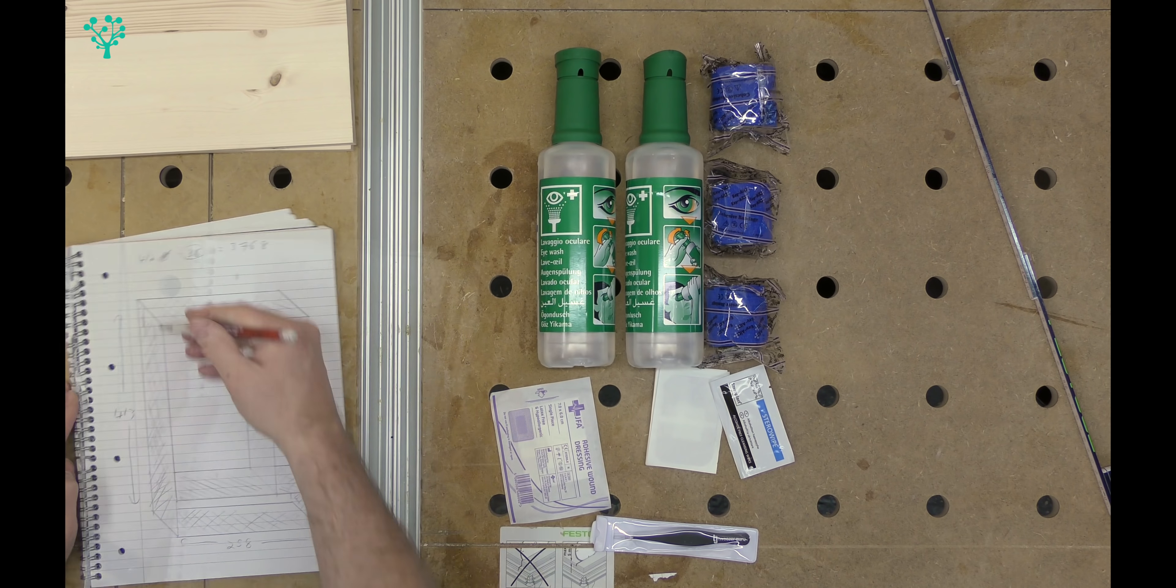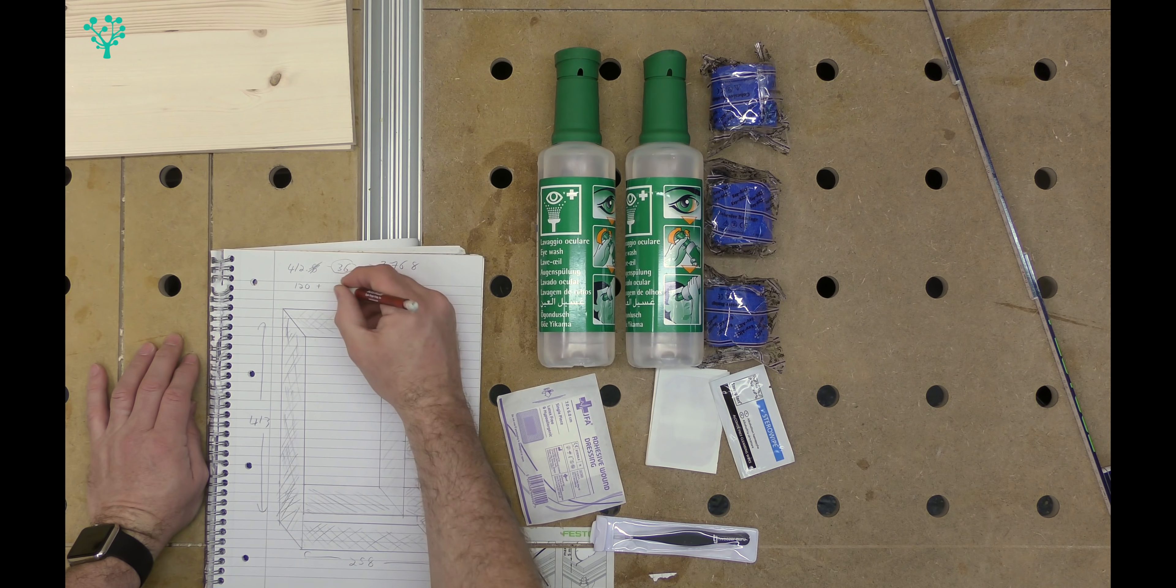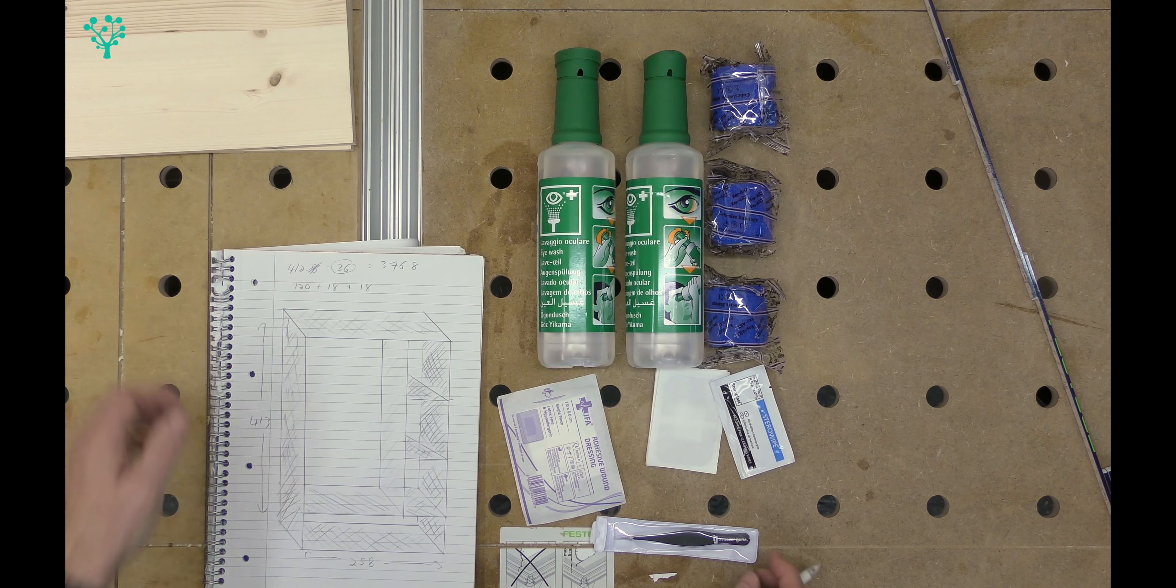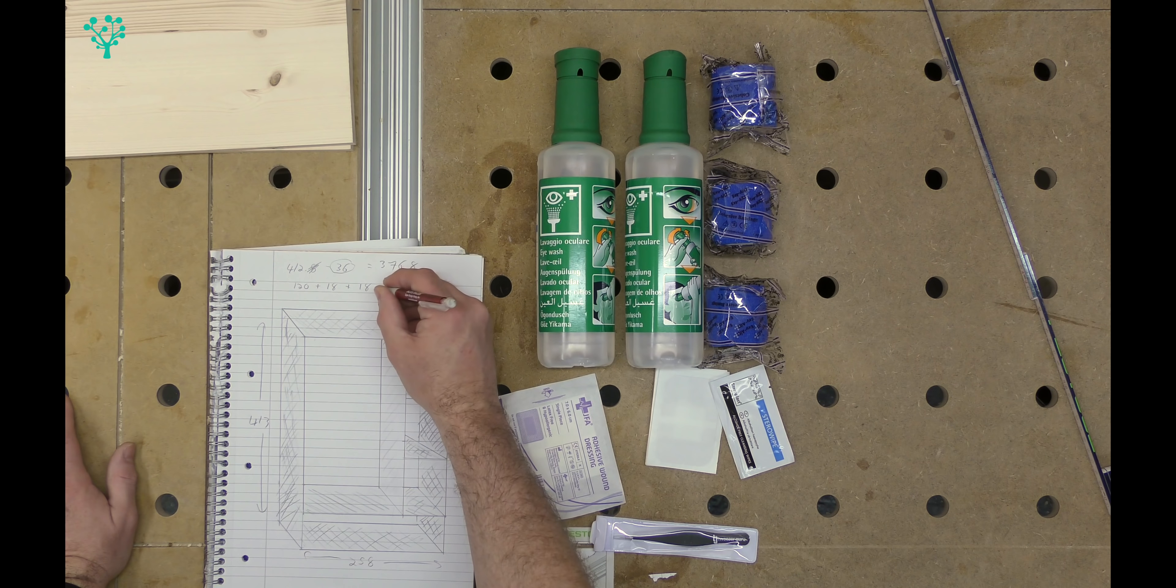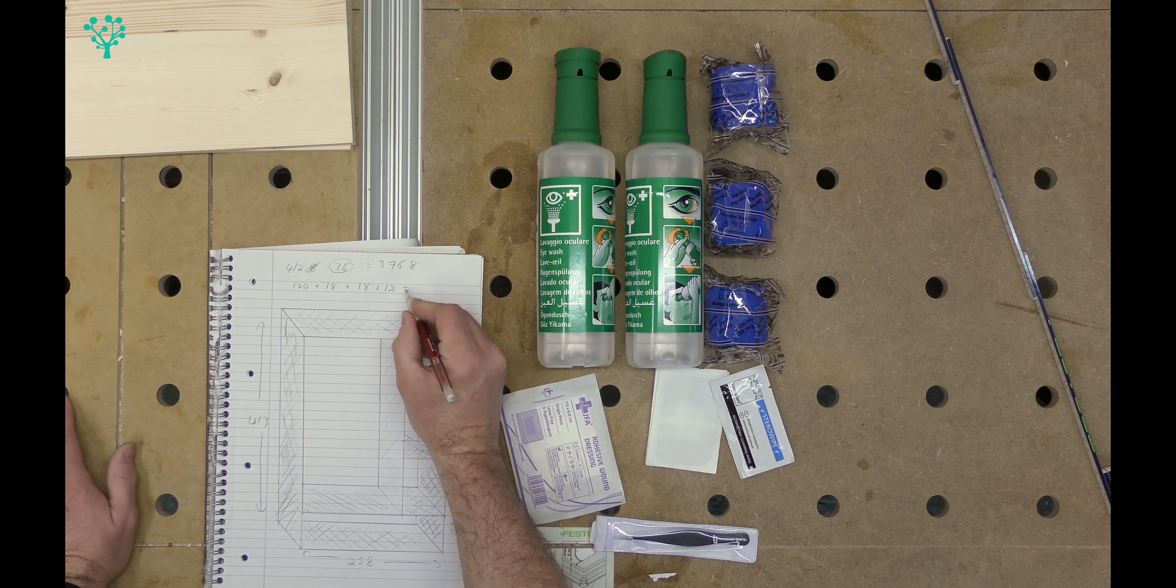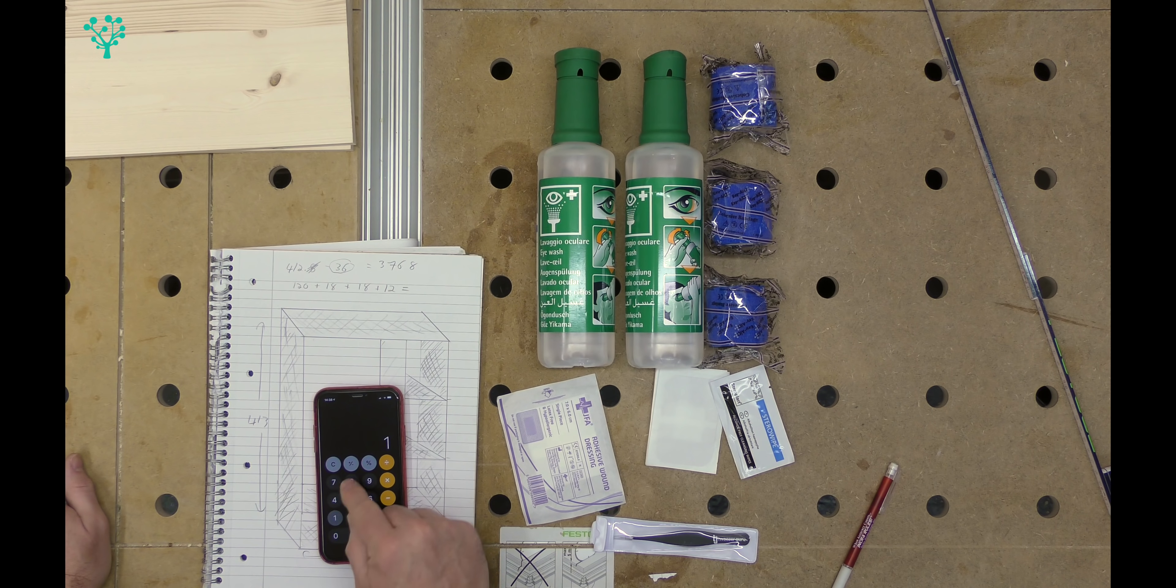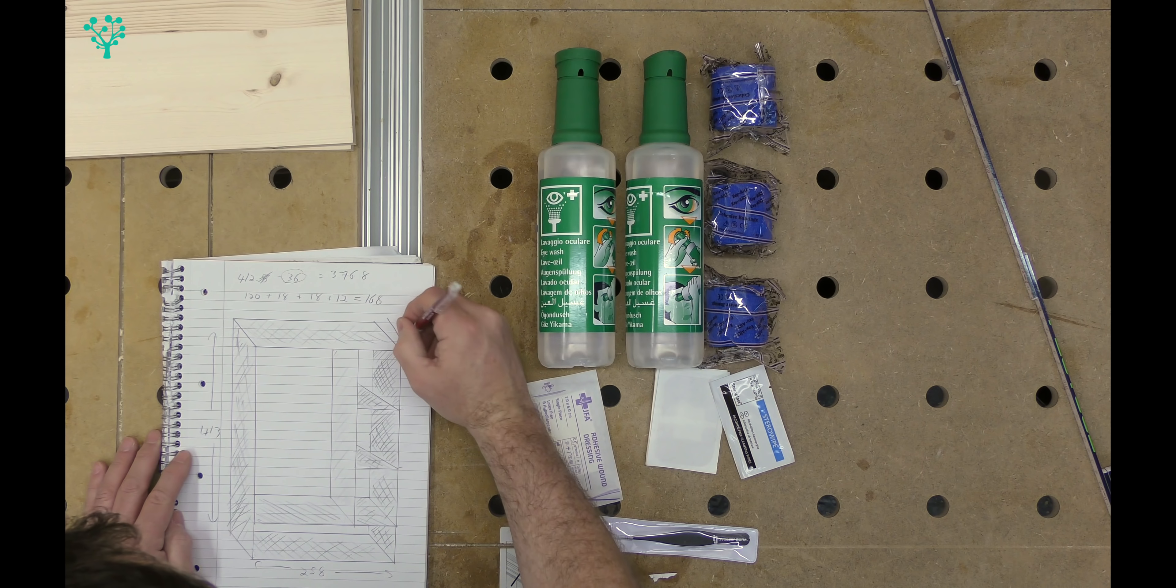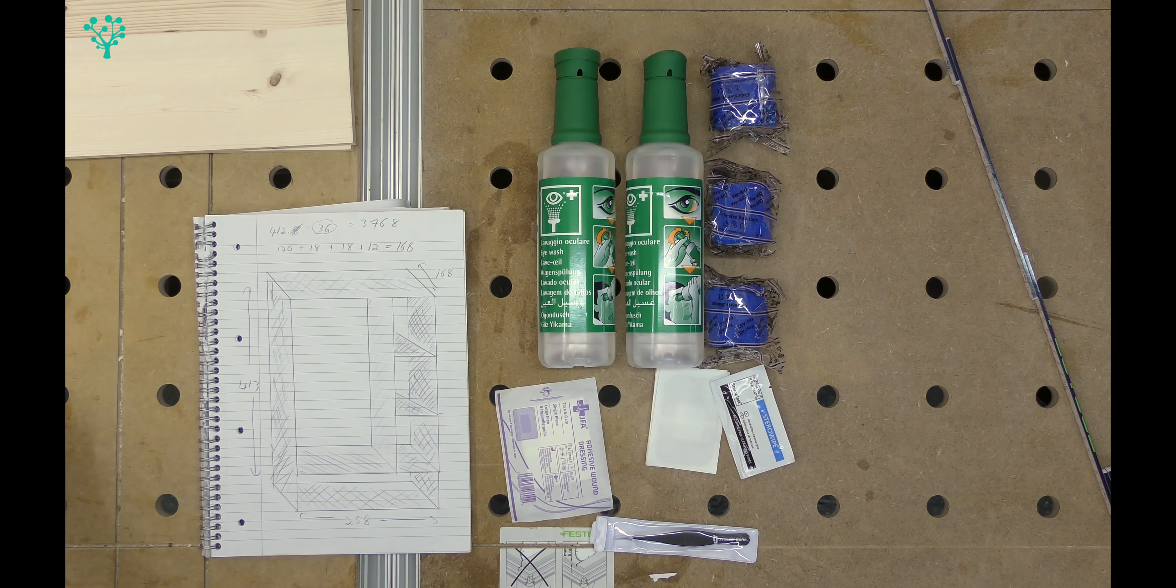We want this to be 120mm plus 18mm for the front face of the drawer, and 18mm for the back of the drawer. We also need to put a back on this, which is likely to be 12mm pine. So 120mm plus 18mm plus 18mm plus 12mm is 168mm.